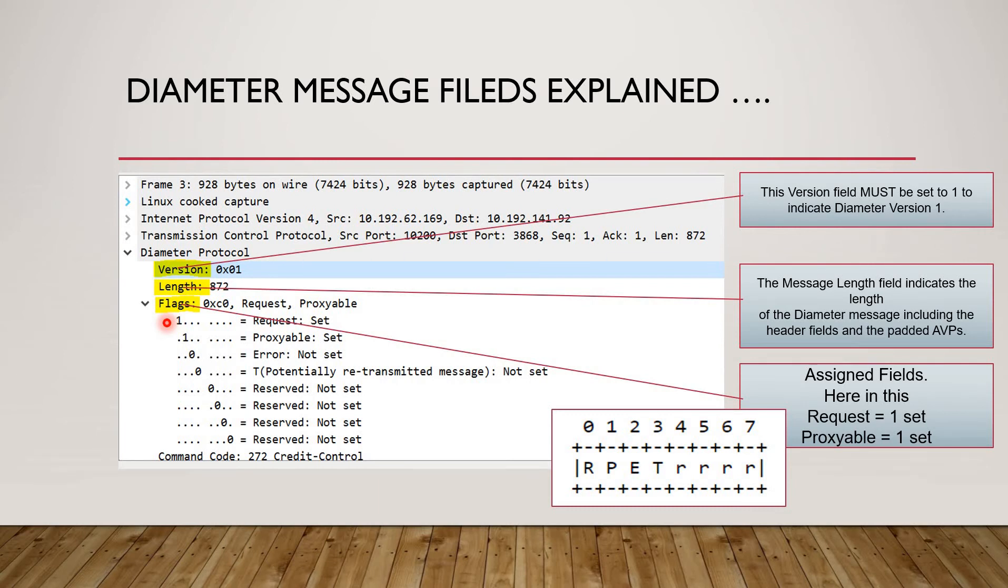I actually don't remember whether I told you or not, but diameter protocol is just like a person who is asking something and in return he wants some reply and the other person has to reply to his question. Here we have request message and the answer message. This particular message is a request message and this flag is indicating it clearly that yes this is a request message. Then we have a proxyable message.